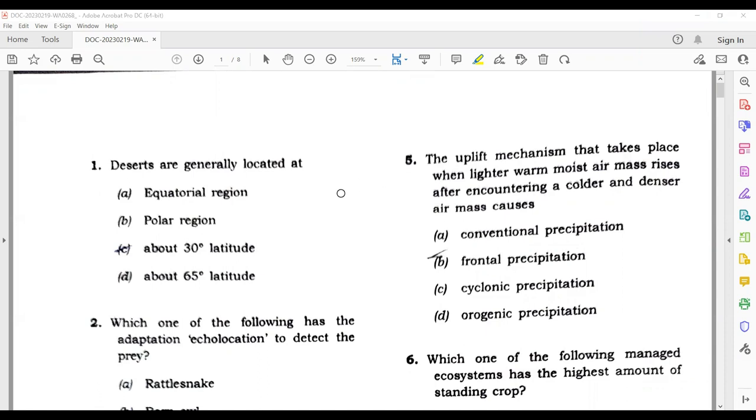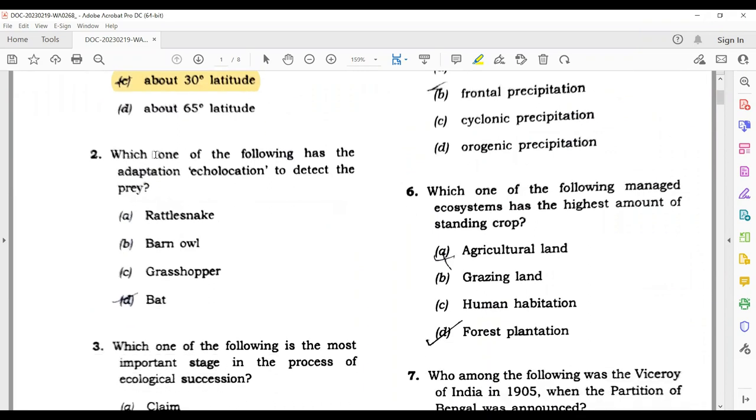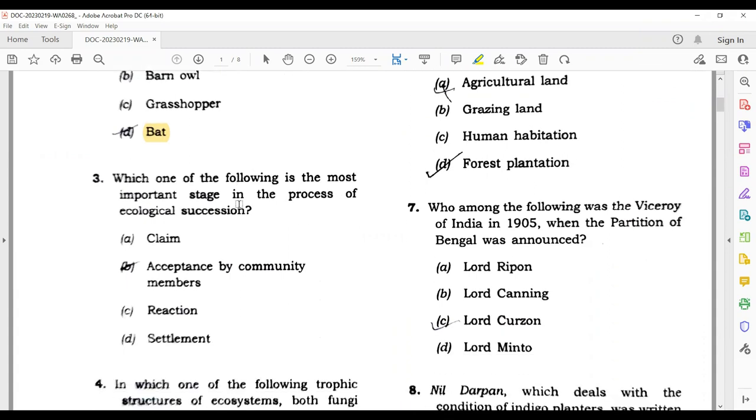The first question here is: deserts are generally located at what latitude? Simple answer is about 30 degree latitudes. This is your correct answer. Now the second question: which one of the following has the adaptation echolocation? When the word echolocation comes, the answer should be clear - it's bats, because bats use echolocation to travel and prey. The third question: which one of the following is the most important stage in the process of ecological succession? This is the fifth stage, which is settlement.